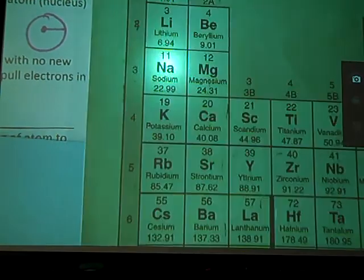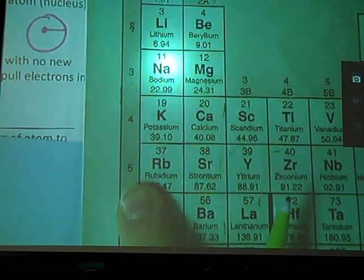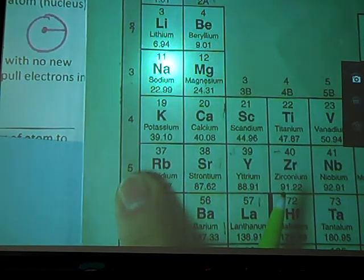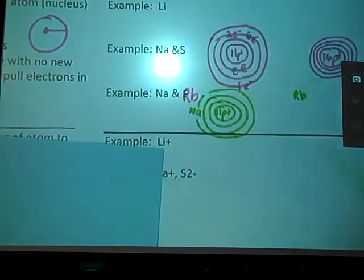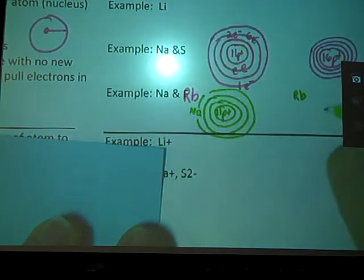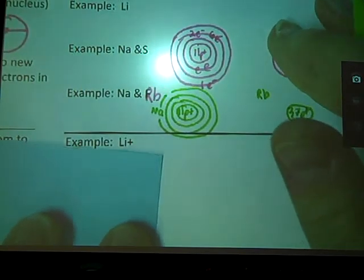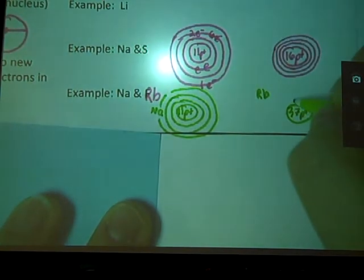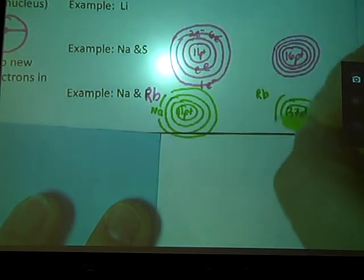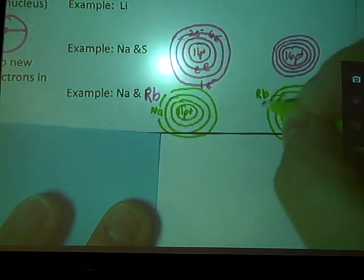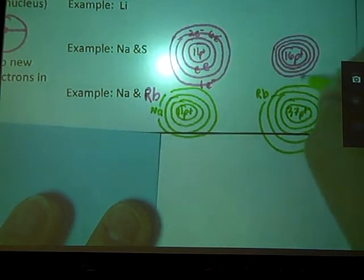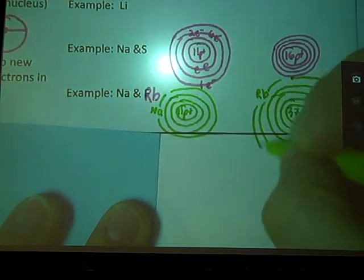Rubidium, on the other hand, has five rings. He's on the fifth row. So five rings in my rubidium. So yes, he has a 37 proton magnet which is much stronger. But if he didn't have that stronger magnet, he wouldn't be able to hold on to the electrons that he has.